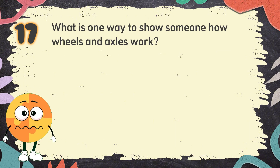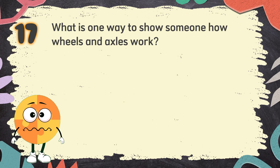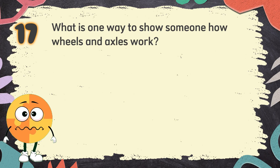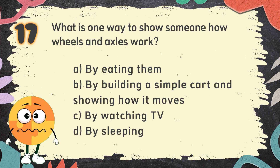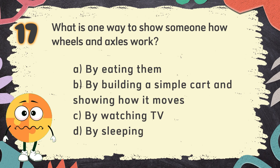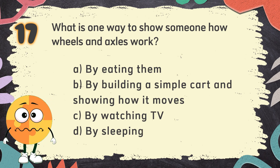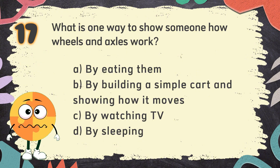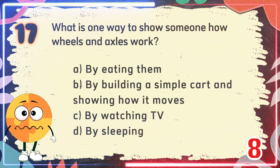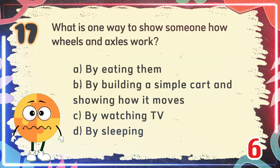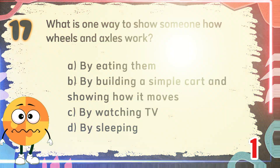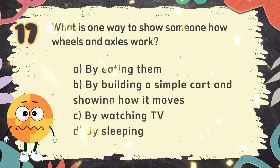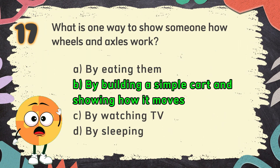Number 17. What is one way to show someone how wheels and axles work? The choices are: A. By eating them. B. By building a simple cart and showing how it moves. C. By watching TV. D. By sleeping. The correct answer is B. By building a simple cart and showing how it moves.